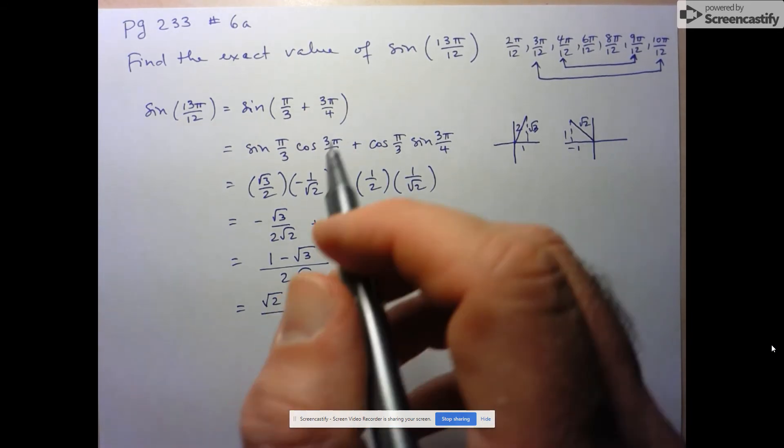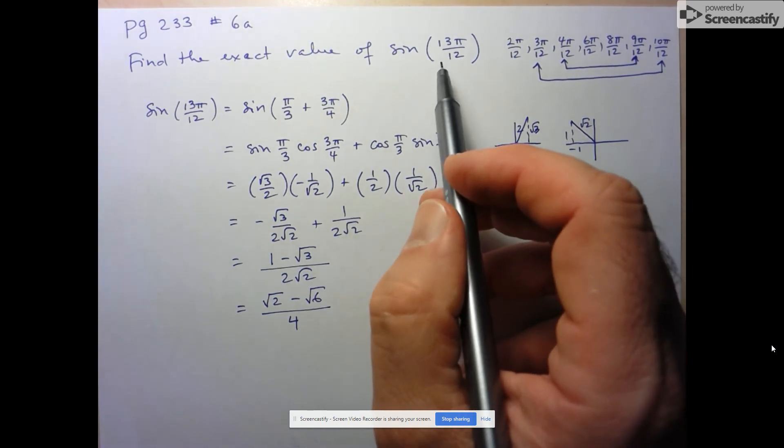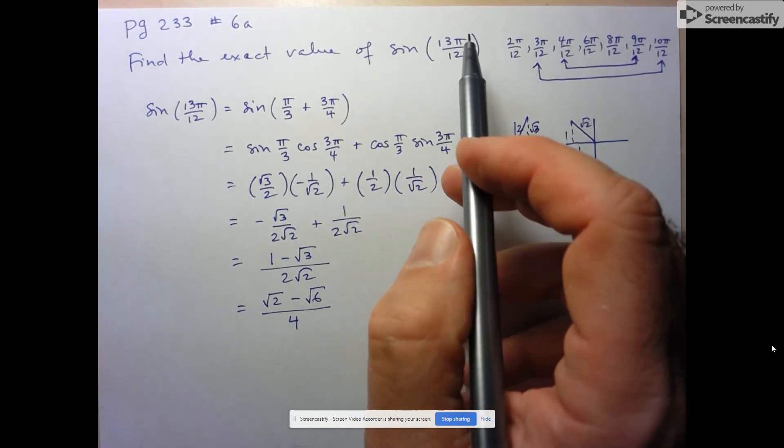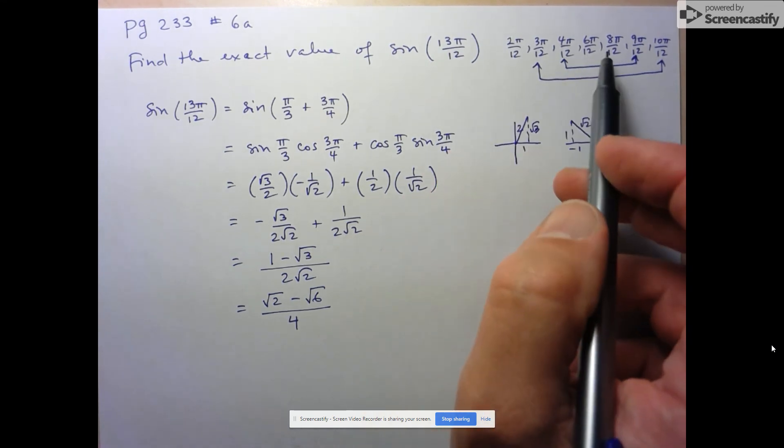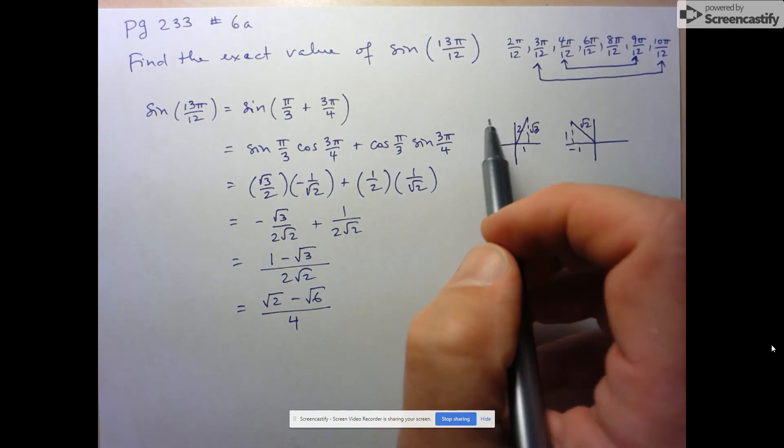Just to recap here, when you're being asked to find the exact value of a sine ratio for an angle that's not a special angle, the idea is to try to identify this as some combination of your basic special angles. That's it for this one.